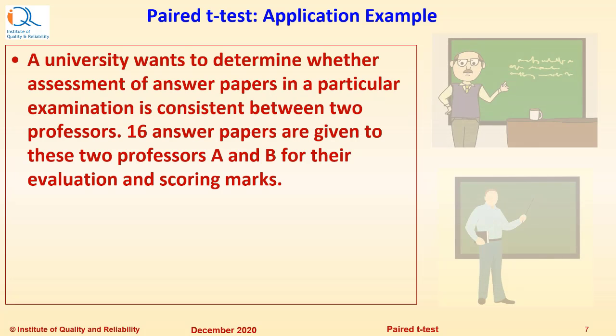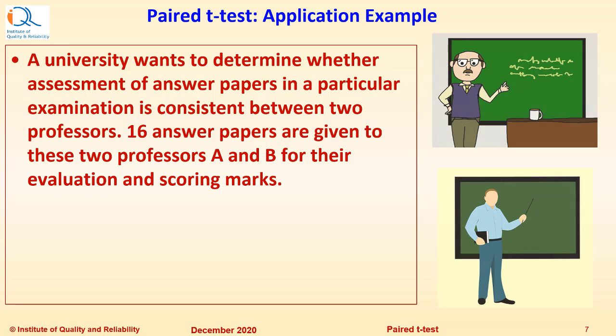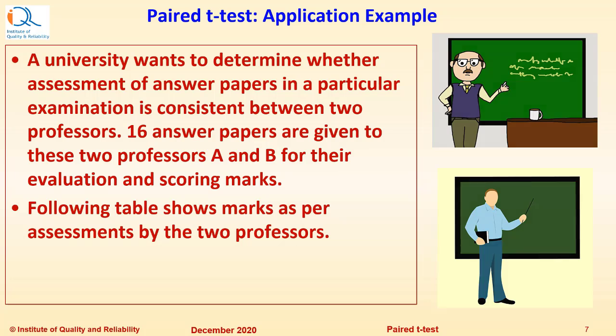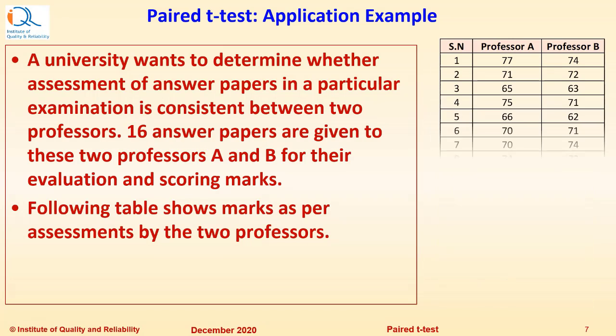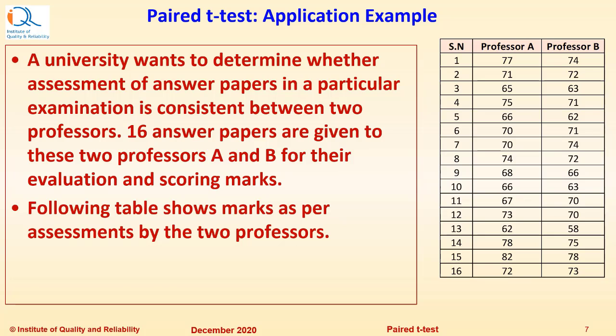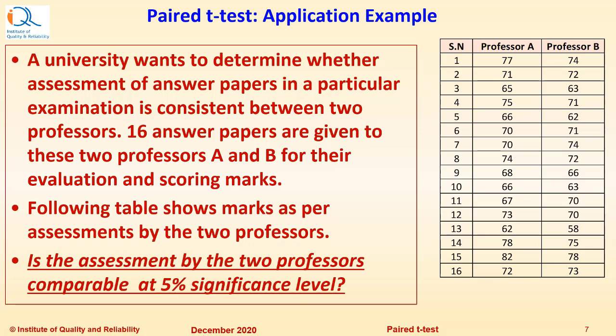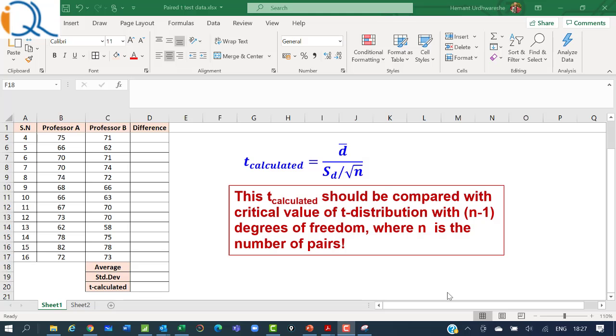Let us now see an application example to understand the procedure. A university wants to determine whether assessment of answer papers in a particular examination is consistent between two professors. Therefore, 16 answer papers are given to these two professors A and B for their evaluation and scoring of marks. Following table shows marks as per assessments by the two professors. Is the assessment by the two professors comparable at 5% significance level or at 95% confidence level?